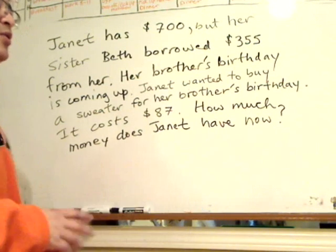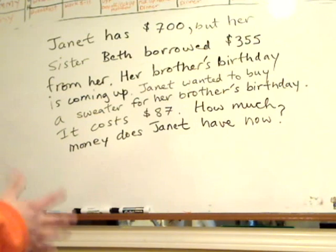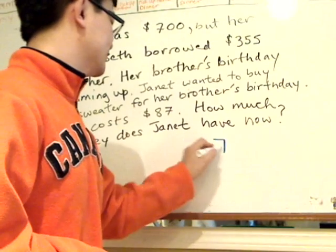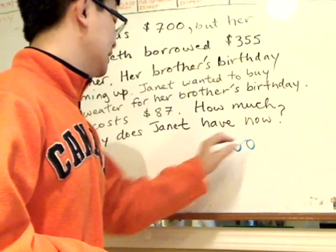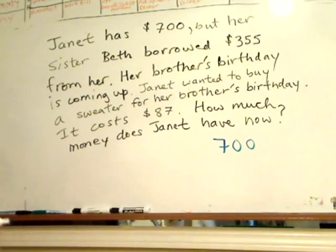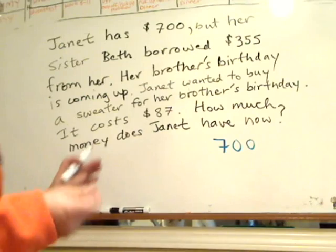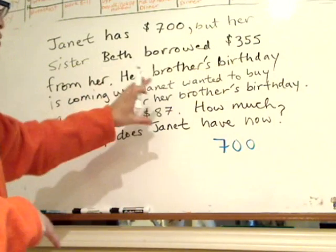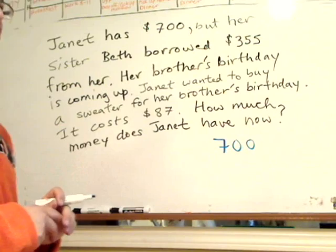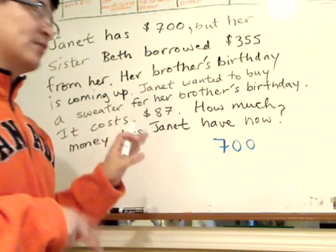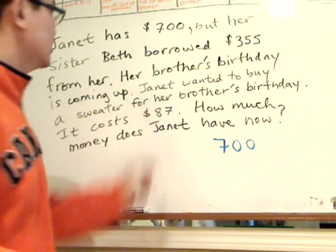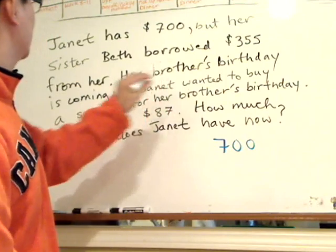Let's solve the question. The question is really about how much Janet has left. She started with $700. In a subtraction question, if there are two numbers you need to subtract from the main number — $700 — do one at a time. So let's look at the first one.